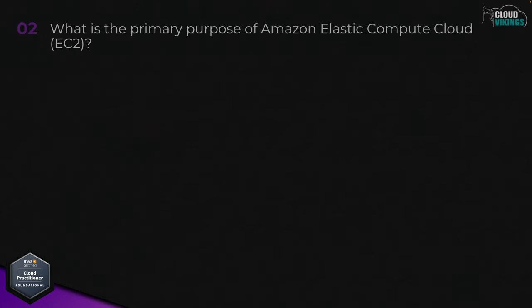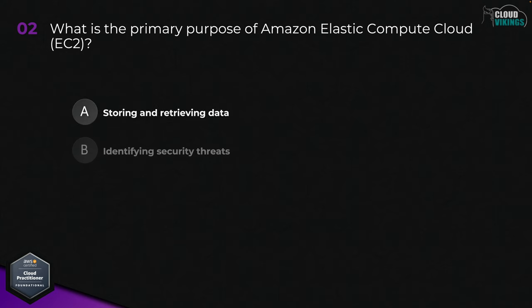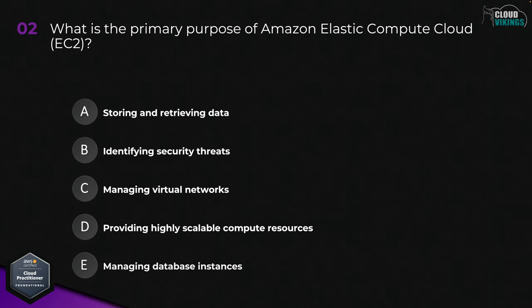Question two: what is the primary purpose of Amazon Elastic Compute Cloud, EC2? Options are: A, storing and retrieving data; B, identifying security threats; C, managing virtual networks; D, providing highly scalable compute resources; or E, managing database instances. The answer here would be D, providing highly scalable compute resources.